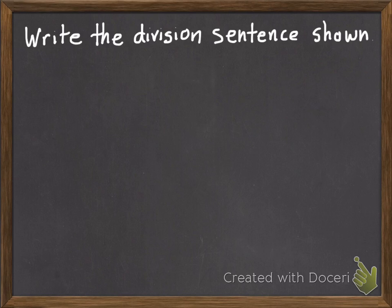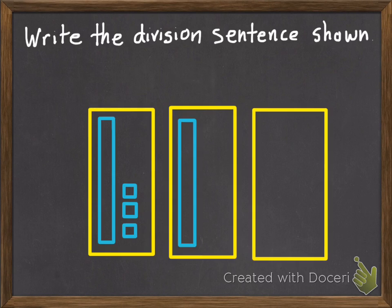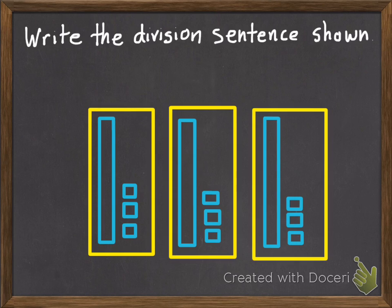Now you're ready for your practice problems. So we're doing like we just did. You're going to write the division sentence shown. So here are the place value blocks. You need to figure out the division sentence. Go ahead and pause. You should have gotten 39 total divided by 3 equals 13. So 39 is our dividend, 3 is our divisor, 13 is our quotient.